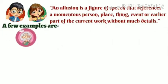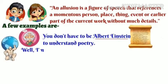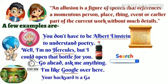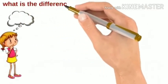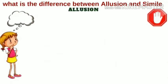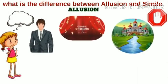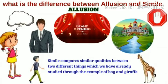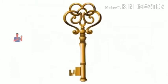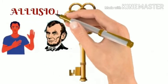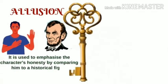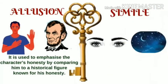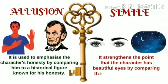A few examples of allusion: 'You don't have to be Albert Einstein to understand poetry.' 'Well, I'm no Hercules, but I could open that bottle for you.' 'Go ahead, ask me anything — I'm like Google over here.' 'Your backyard is a garden of Eden.' The difference between allusion and simile: an allusion is simply a brief mention of a person, place, or event, while simile compares similar qualities between two different things. Describing a character as being honest like Abraham Lincoln is an allusion, while 'Her eyes sparkle like the twinkling stars' is a simile.